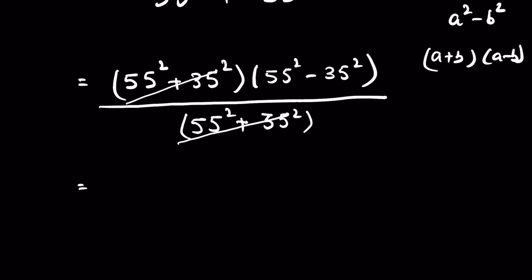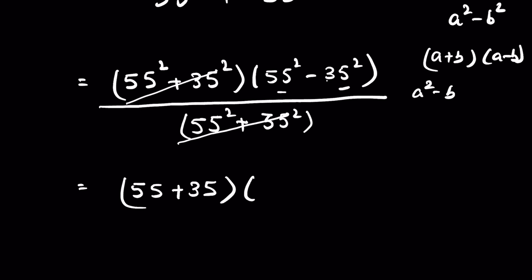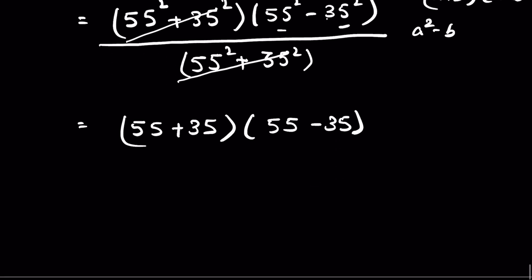Now again, if we consider 55 as a and 35 as b, then 55 squared minus 35 squared is again in the form a squared minus b squared, so we write it as (55 + 35)(55 − 35). That gives us 90 times 20, which equals 1800. That is the answer.